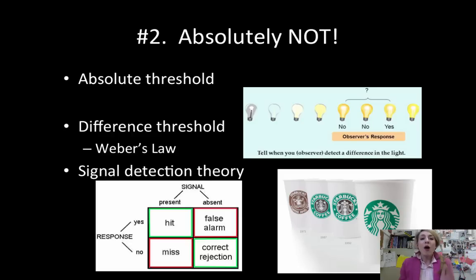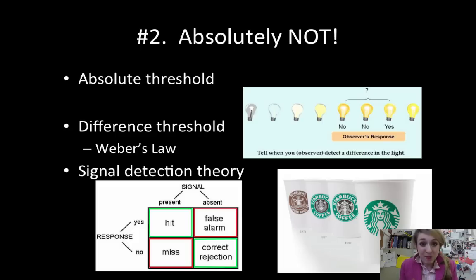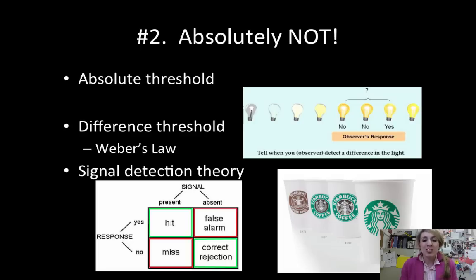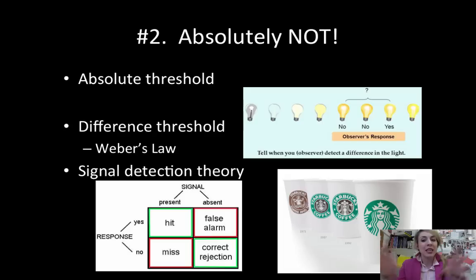Now that we know if a stimulus is there or not, how do we know if it's different from something else? How do we know when two smells are not exactly the same? When we're talking about difference thresholds, we use something called Weber's Law. Weber's Law states that when you detect a difference, it has to be a percentage change and not an amount change. So if I'm looking at a perfume formula and I add two more percent vanilla, I have to add two percent — I can't just add two drops of vanilla, because two drops in one formula could be a much bigger amount than in another.